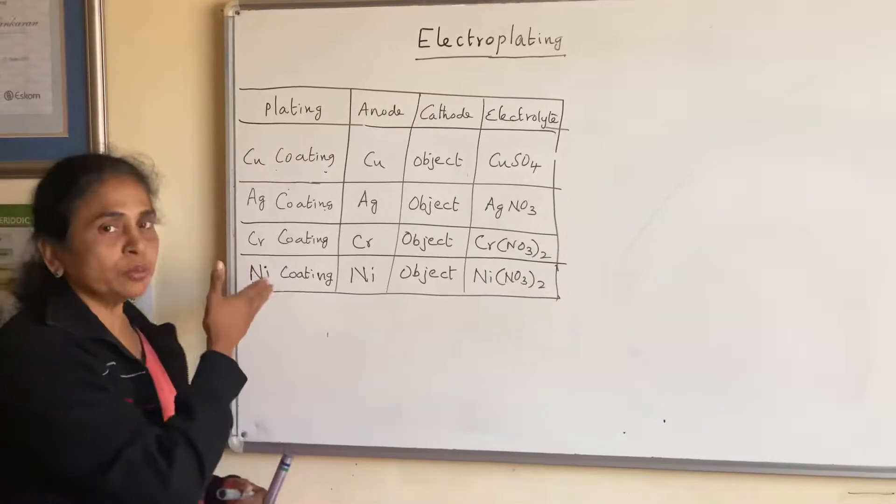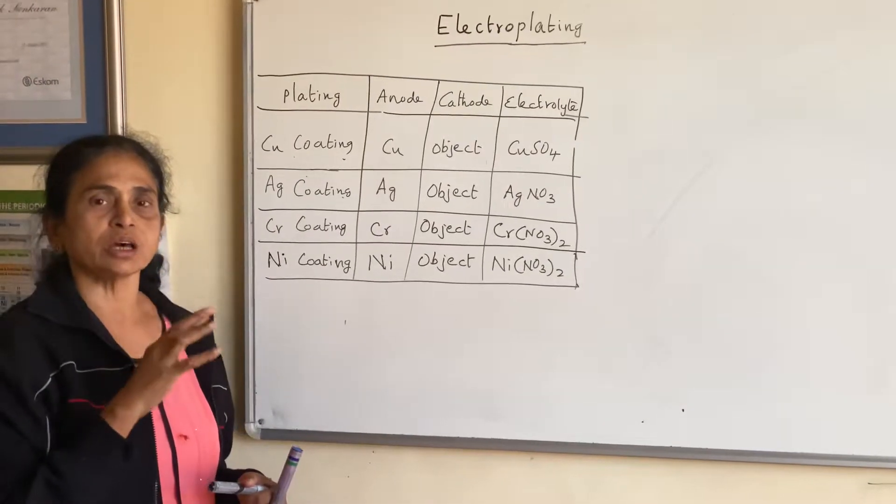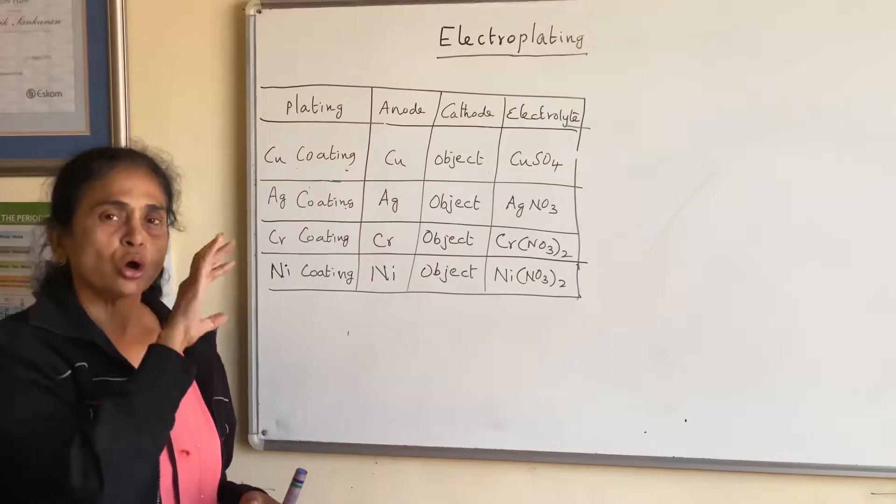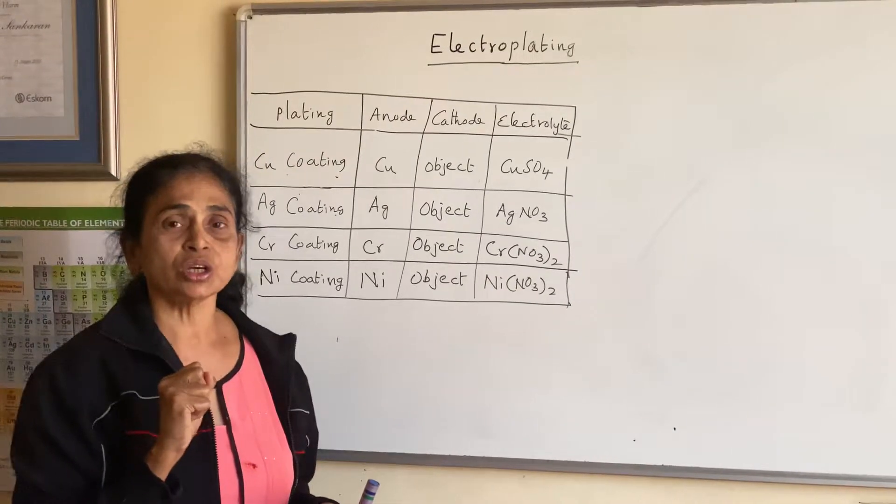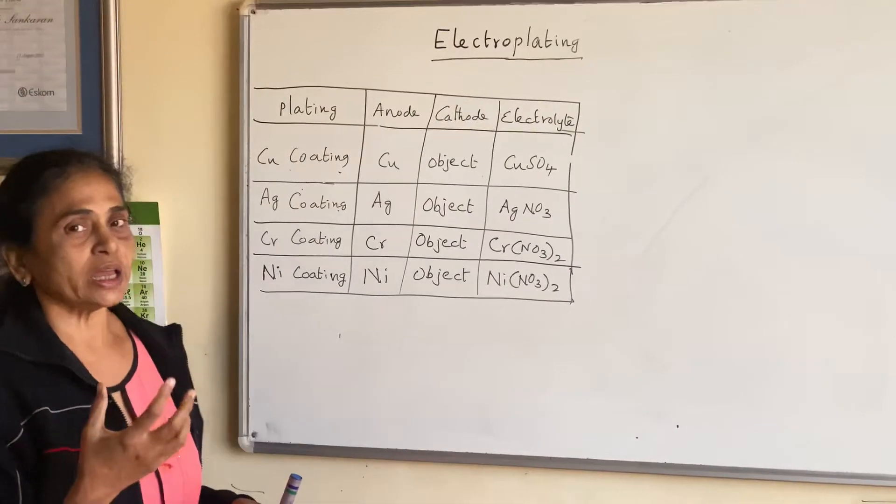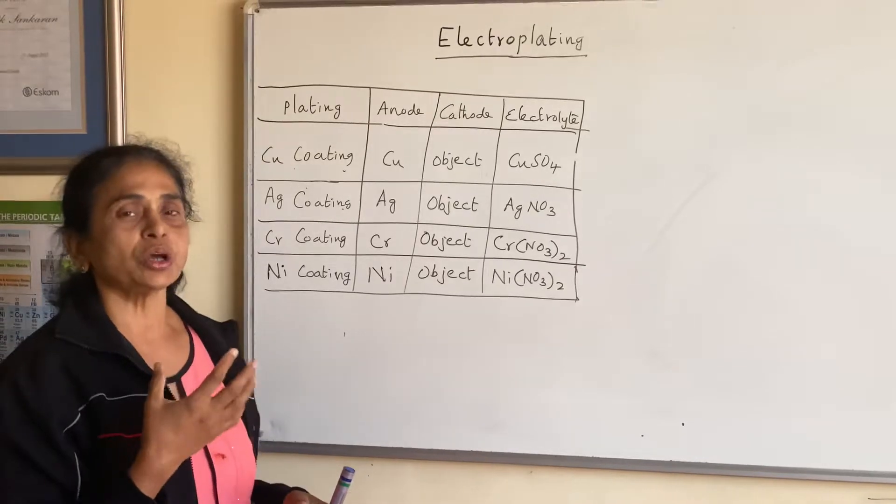Copper, silver, chromium, nickel - these metals are used to coat on iron generally to prevent it from corrosion and also to have a beautiful appearance.